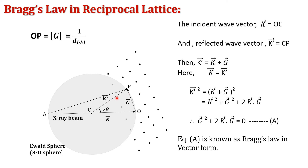In reciprocal lattice space, if the diffracted X-ray beam intersects the surface of the Ewald sphere and the reciprocal lattice point P also lies on the sphere surface, diffraction is possible. If no reciprocal lattice point intersects the surface of the sphere, diffraction cannot occur. Hence, Bragg's law in reciprocal lattice is represented in vector form as G² + 2k·G = 0.